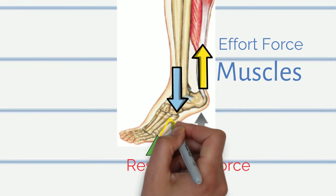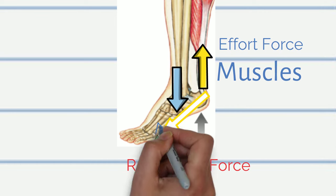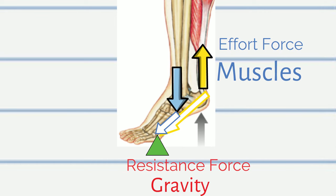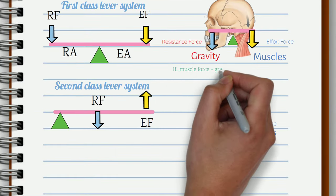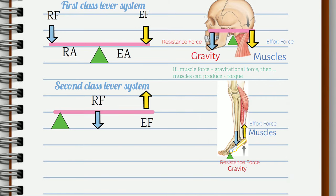Notice that in this system the effort force is much further from the axis of rotation than the resistance force. So if the force production of the calf muscle would equal the gravitational force, the calves would be able to generate more torque. But it's very rare in the musculoskeletal system.